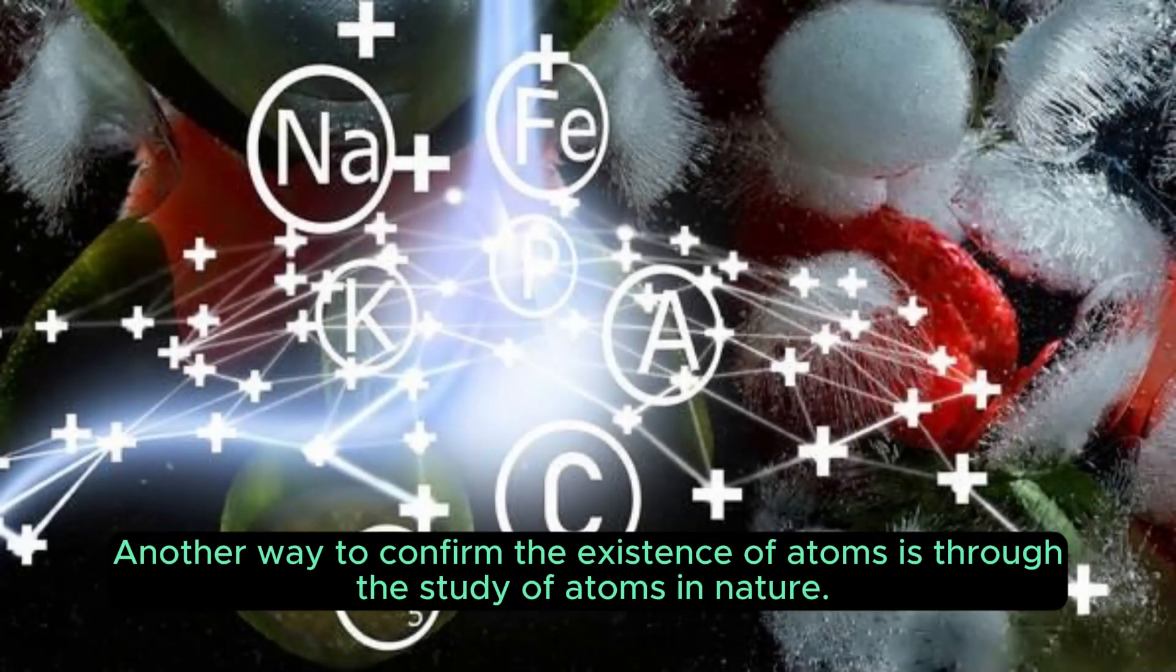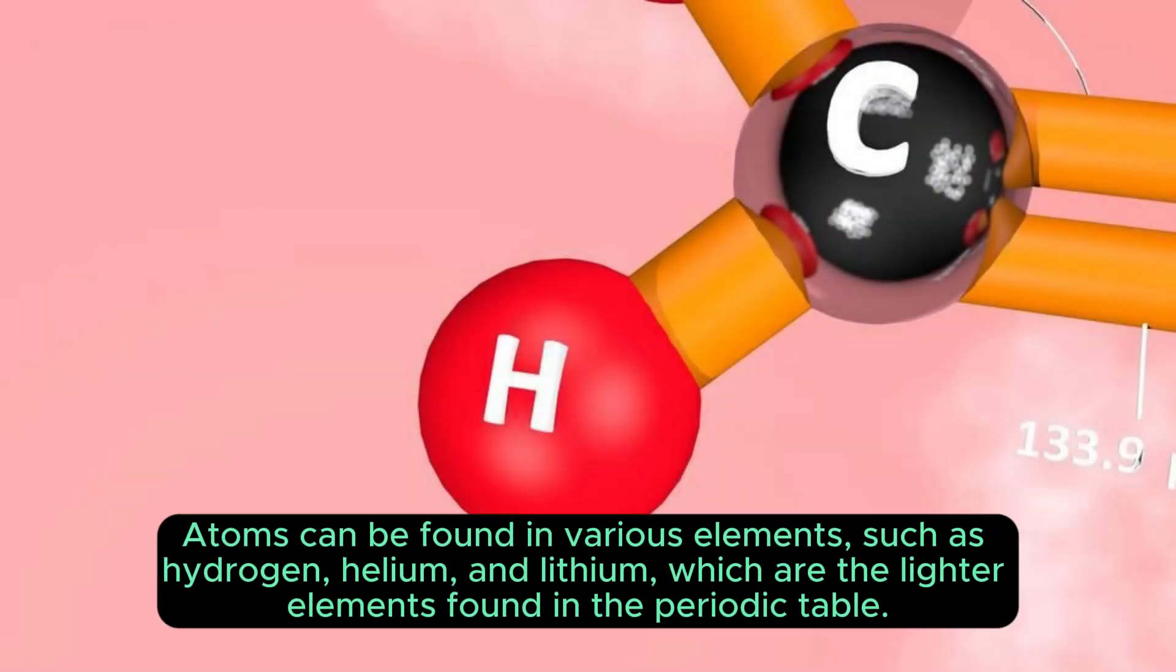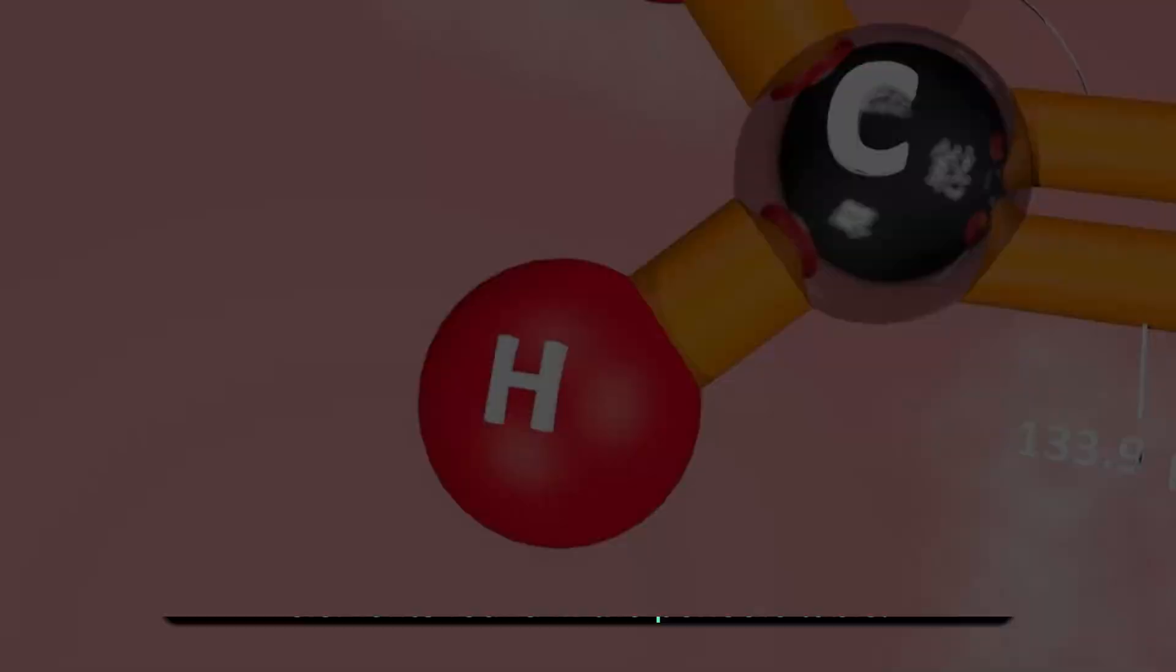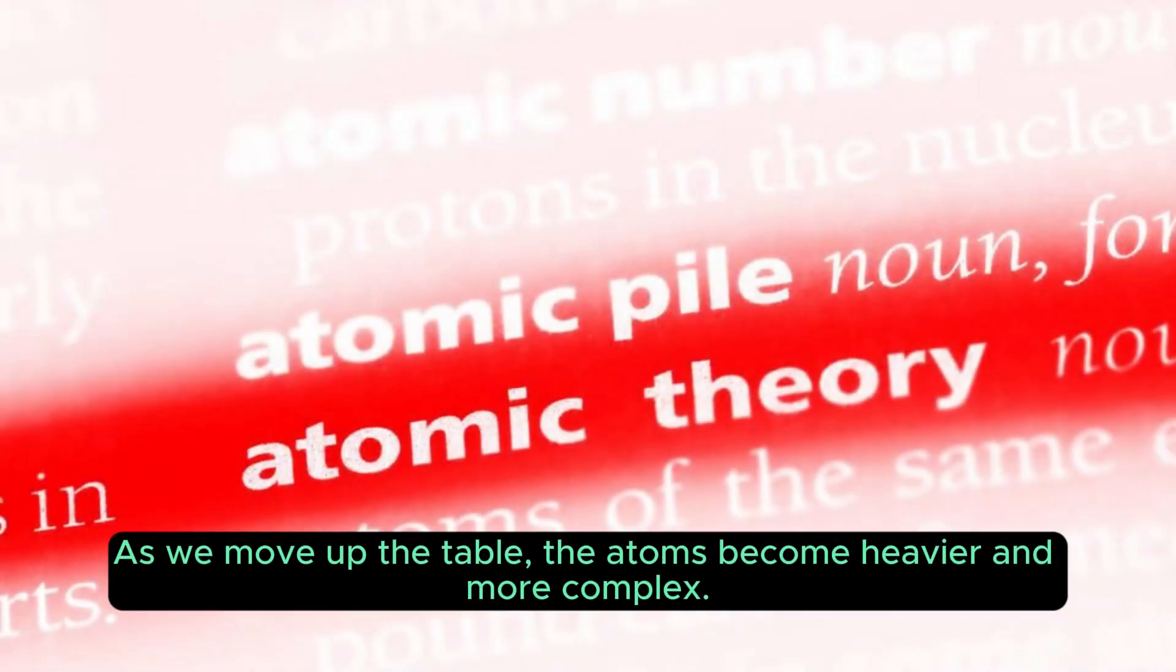Another way to confirm the existence of atoms is through the study of atoms in nature. Atoms can be found in various elements, such as hydrogen, helium and lithium, which are the lighter elements found in the periodic table. As we move up the table, the atoms become heavier and more complex.